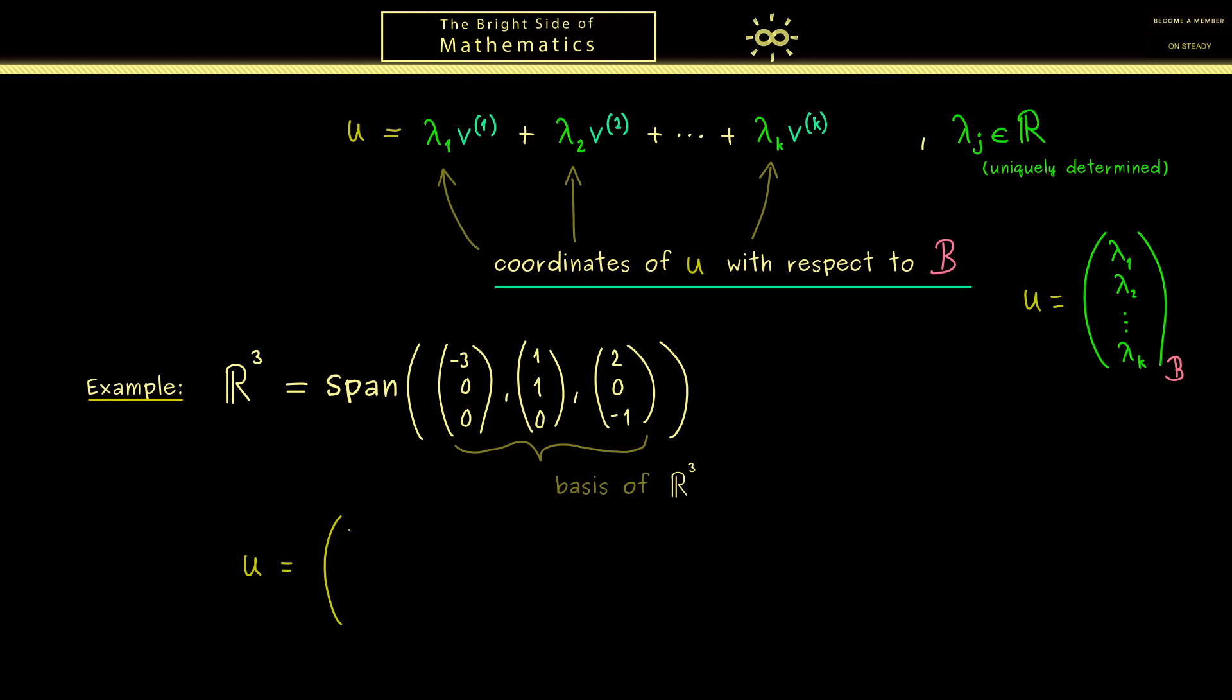And there let's take the vector 1, 2, -1. And now you already know here these numbers are the coordinates of u with respect to the standard basis. But obviously not with respect to this basis here.